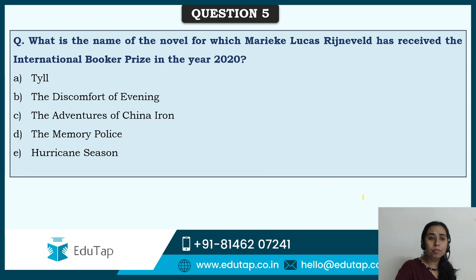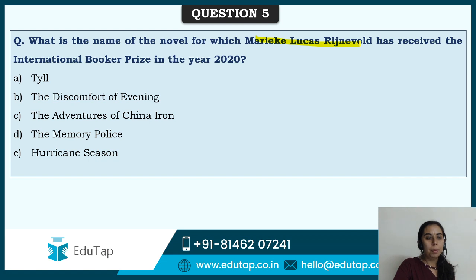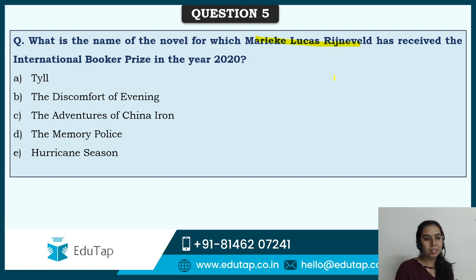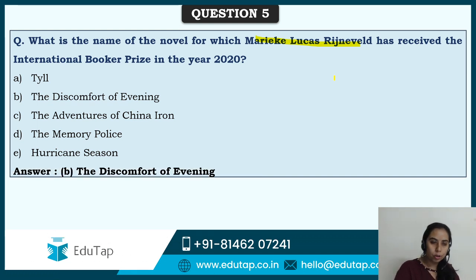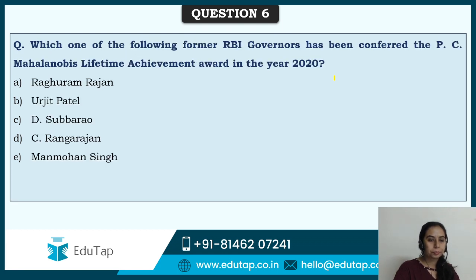What is the name of the novel for which Marieke Lucas Rijneveld received the Booker Prize in 2020? The International Booker Prize went to Marieke for the novel 'Discomfort of Evening.' The other options were Adventures of China Iron, Memory Police, and Hurricane Season. Discomfort of Evening is the correct answer. Booker Prize is another very important prize, just like the Commonwealth Short Story Prize.